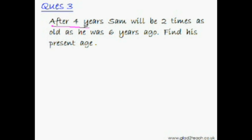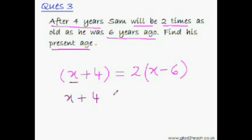Let me do it. After 4 years means x plus 4. Sam will be 2 times as old as he was 6 years ago. Six years ago means x minus 6, as we're going back in the past. So we have: x plus 4 equals 2 times (x minus 6).